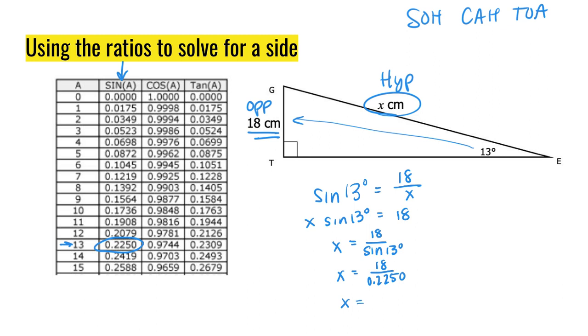I'm going to use my sine column, and I'm looking at 13. I pull that value right here, and I have that x equals 18 over 0.2250. When I use my calculator, I get 18 divided by 0.225. I get that x equals 80. If you remember the triangle from earlier, we had a triangle with 13 degrees with measures of 9 and 40. This is a dilation by 2. 18 and 80 are the sides, and I also have just found it using the trigonometric ratios. This is 80 centimeters.